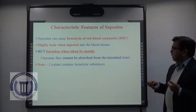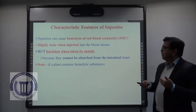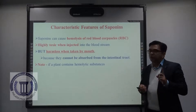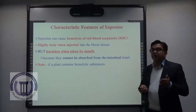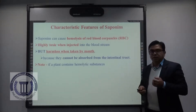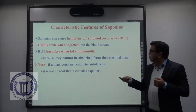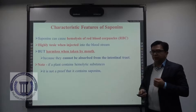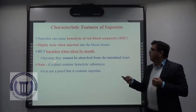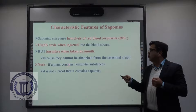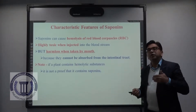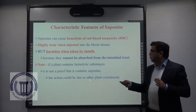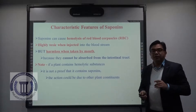An important note: if any plant or plant extract contains a hemolytic substance, it does not necessarily mean it contains saponins. Even though saponins can cause hemolysis of RBC, the hemolytic action could be due to the presence of other plant constituents. Hemolysis alone is not proof that saponins are present.